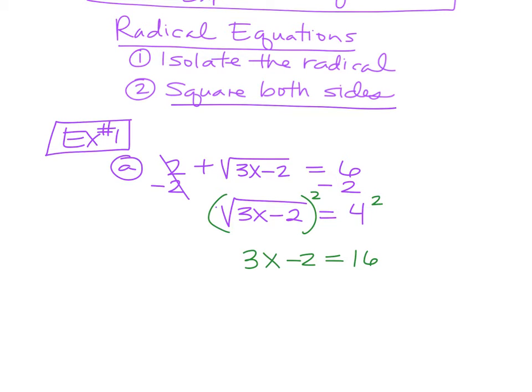So what we're left with then is 3x minus 2 equals 16. From there, this should be the easiest problem you've ever done. This looks like algebra one, day one. We are going to add 2. We get 3x equals 18, divide by 3, so x is 6.